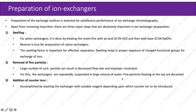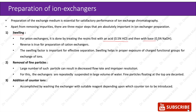Now let us see how we prepare ion exchangers before a run. Preparation of the exchange medium is essential for satisfactory performance of ion exchange chromatography. Apart from removing impurities, there are three major steps that are absolutely important in ion exchanger preparation. First is swelling. For an ion exchanger, it is done by treating the exchange resins first with an acid — usually 0.5 N hydrochloric acid — and then with a base — 0.5 N sodium hydroxide. Reverse is true for cation exchangers.